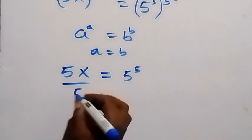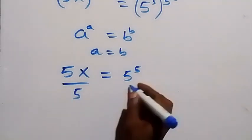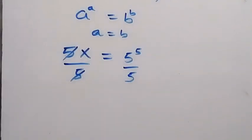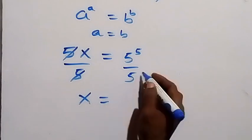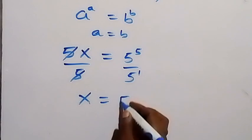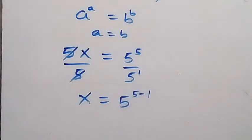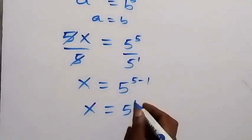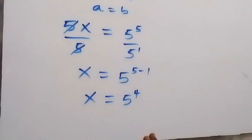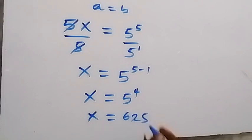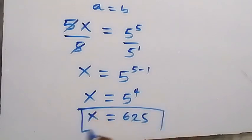From here, let's divide both sides by 5. The 5s cancel and we are left with x. Applying the law of indices, we subtract the powers: x equals 5 raised to power 5 minus 1, which is x equals 5 raised to power 4. And 5 to the power of 4 is 625, that's 5 times 5 times 5 times 5. So the value of x is 625.